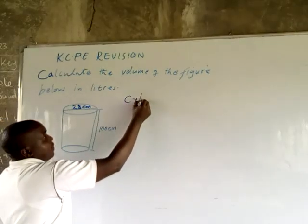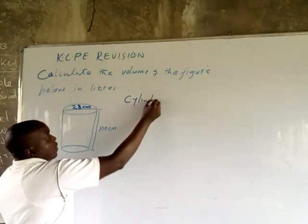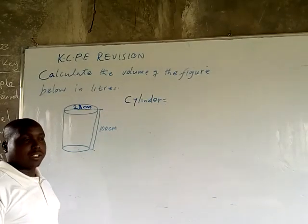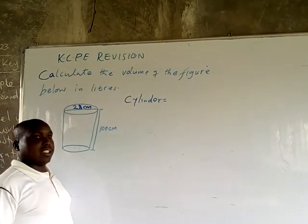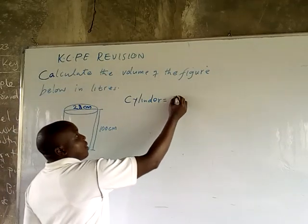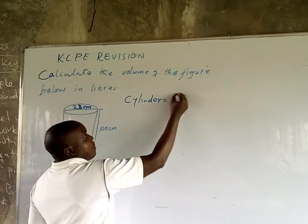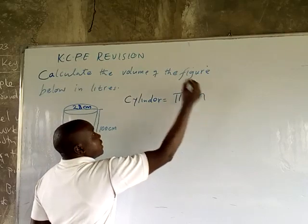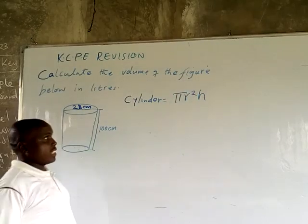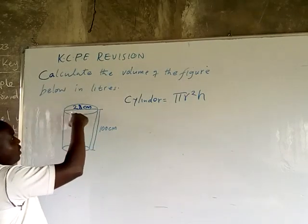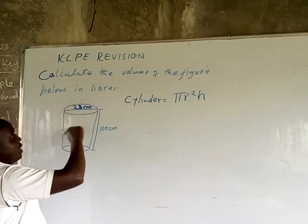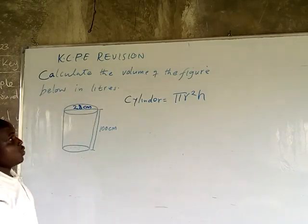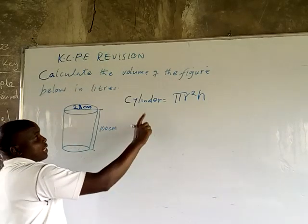So if it is the cylinder, the formula for getting the volume of the cylinder is: Volume equals pi times R squared times height. We get the area of the circle and then multiply by the height to get the volume. Let us now apply the formula.